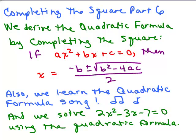This is part 6 of completing the square. In this video, we derive the quadratic formula by completing the square. We start off with ax squared plus bx plus c equals 0 and solve for x to get this formula. Then we learn the quadratic formula song so it's easy to remember, and we solve an equation using the quadratic formula.